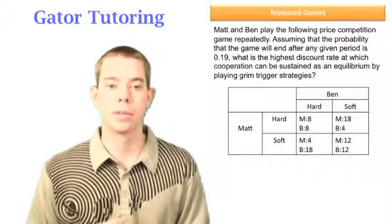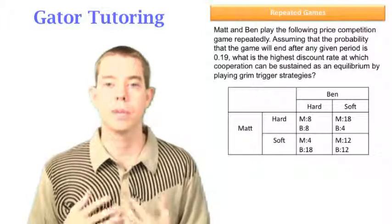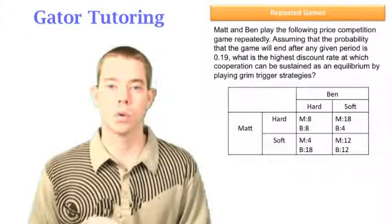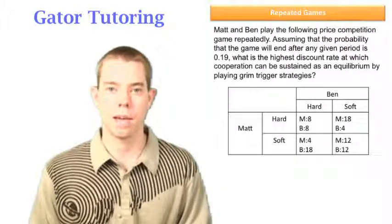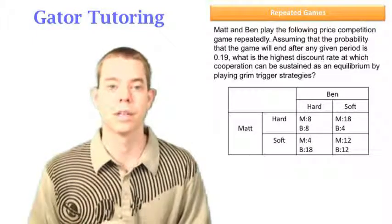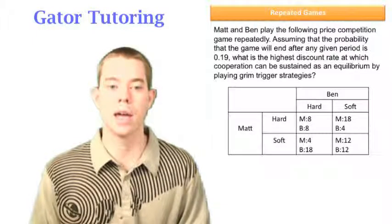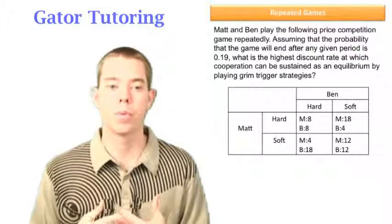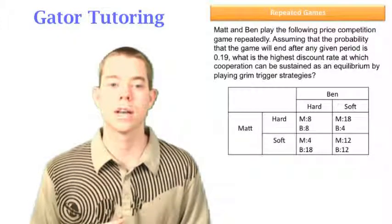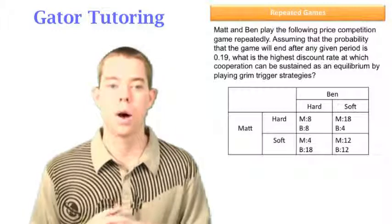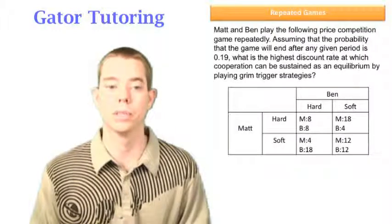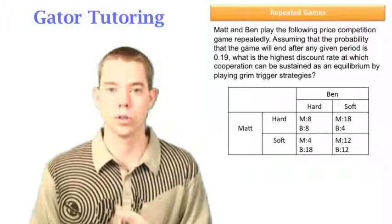Matt and Ben are going to play the following price competition game repeatedly. Usually we're dealing with a one-shot game, now we're dealing with a game that happens multiple times. Assuming that the probability that the game will end after any given period is 0.19, what is the highest discount rate at which cooperation can be sustained as an equilibrium if these players are playing grim trigger strategies?